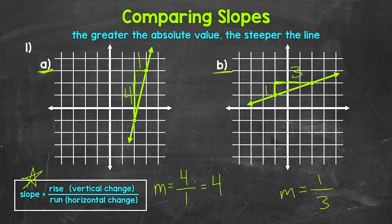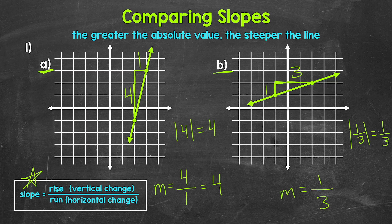Now let's talk about these slopes. Which slope has a greater absolute value — which is further from zero? The absolute value of four is four, and the absolute value of one third is one third. Four is the greater absolute value, and therefore line A is the steeper line. Four is further from zero than one third. Here we have two positive slopes, so we can just look at which is greater. But we mention absolute value because when negatives are involved, we have to consider the absolute values of the slopes, not just which is greater.